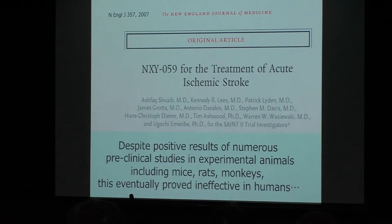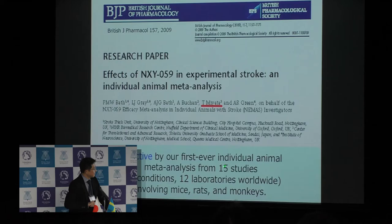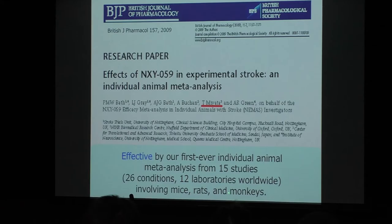But this conclusion should be taken cautiously. First, there was an individual animal meta-analysis — meta-analysis not in humans, but in animals. This was conducted in collaboration with a British team. It was based on 15 papers involving mice, rats, and monkeys. We concluded that this compound was effective in animal experiments, pointing to the limitation of animal data.